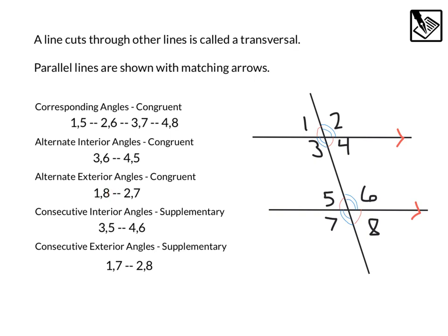Alternate exterior, alternate or opposite sides, exterior, outside, we've got 1 and 8, those are congruent. And then 2 and 7, those are congruent as well.